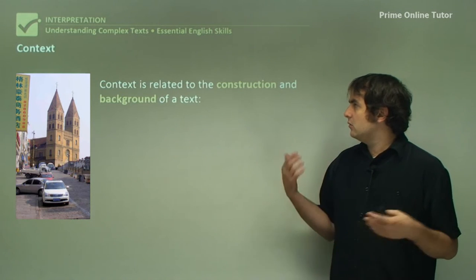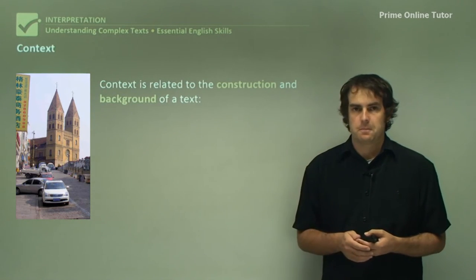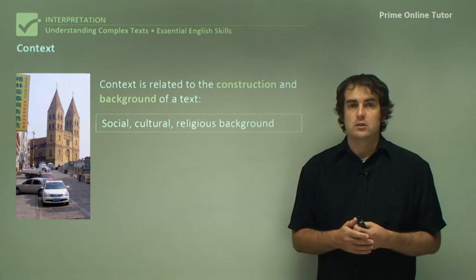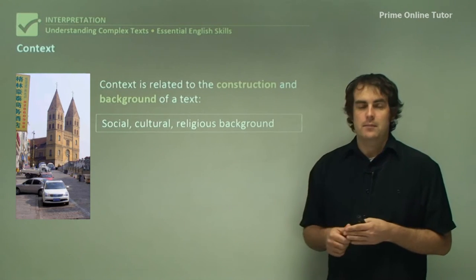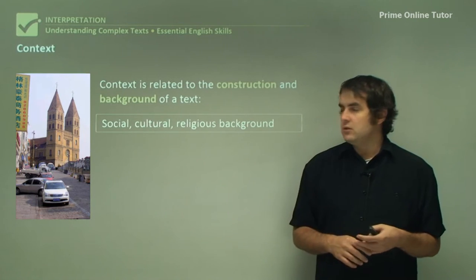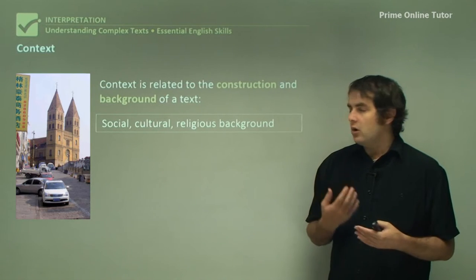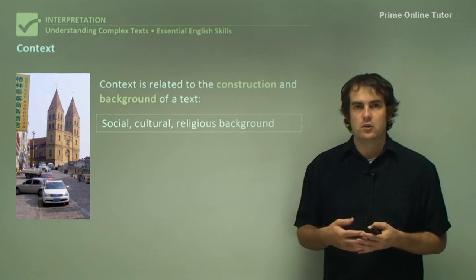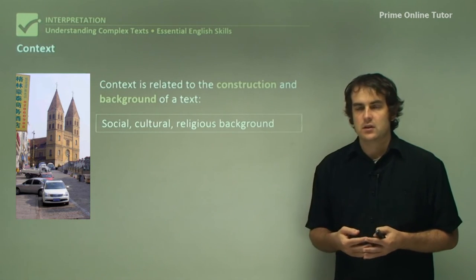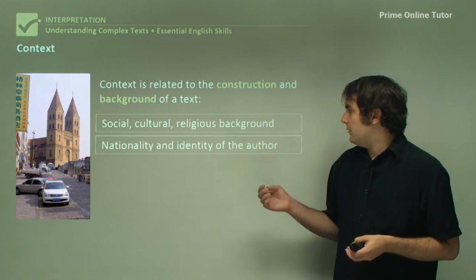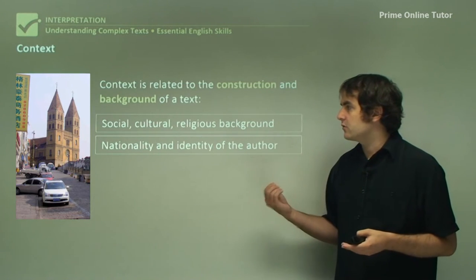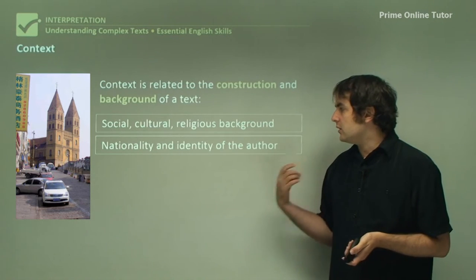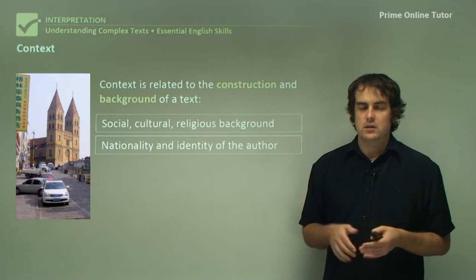The context: look at it in terms of its background and also how it's constructed. Different texts from different times are going to be constructed in different ways. It can relate to the social, cultural, and religious background of the author, the subjects, or even where it comes from — this can involve history as well. There are a number of different cultures and contexts which can clash. In terms of how a text represents things, it can be done differently depending on the era. The nationality and identity of the author is another consideration — where the text comes from, the point of view, and the person — because these things can be different even within a country. You need to look at the identity of the author and basically who they represent themselves to be in a text.